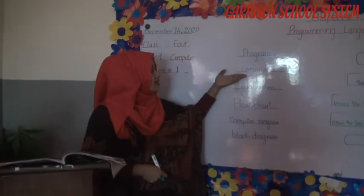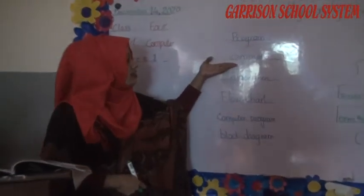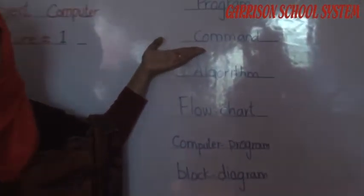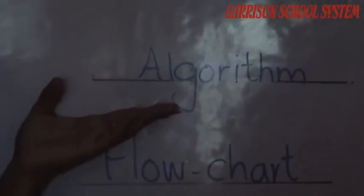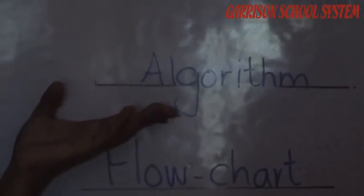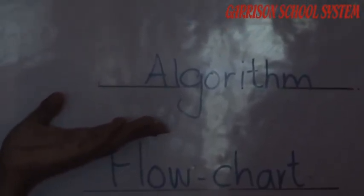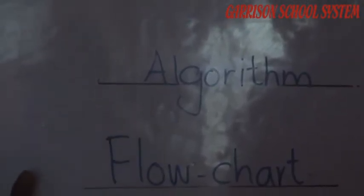Next our topic is command. Any instruction given to the computer is called a command. And an algorithm is when you can solve your problems in a step-by-step manner.